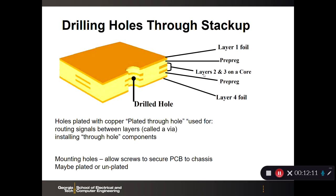Once you have the stack, you drill holes for multiple purposes. You can plate those holes with copper — hence the term plated through hole — used for routing signals between layers, which is called a via. For mounting through-hole resistors, leads go through to be soldered on the bottom side. Other holes allow screws to secure mounting hardware through the PCB into the chassis, allowing the board to withstand vibration. These holes may be plated or unplated depending on your intentions.